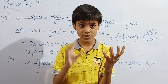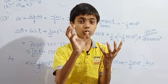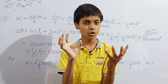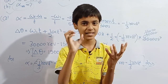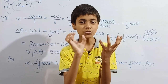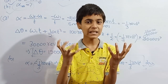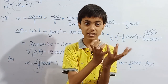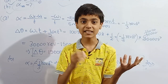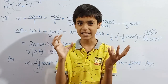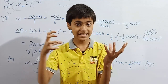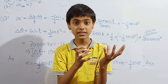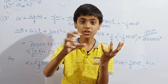The moon has a horizontal velocity in this direction, so the moon tries to escape here, but the earth's gravitational force attracts it. So one component of its velocity comes here, and instead of just going straight, what does it do?